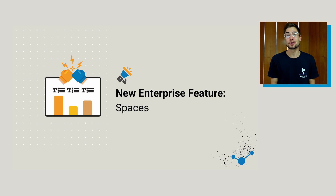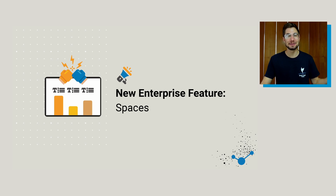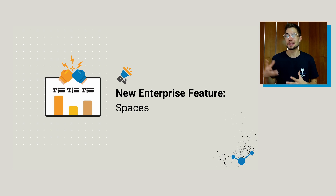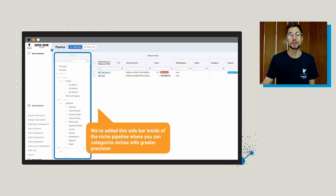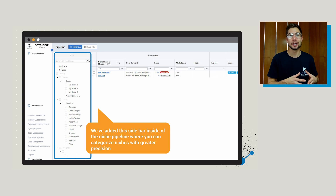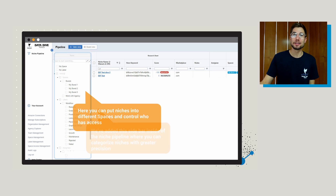The first new enterprise feature I want to walk through is spaces. Some of this is going to be pretty intuitive — we're just making these explainer videos to get you from zero to one. So we've added a new sidebar inside of the niche pipeline which allows you to categorize niches with a little bit more precision. Basically, spaces are different buckets that you can put niches into, and on the left-hand side you're going to see what these spaces are.